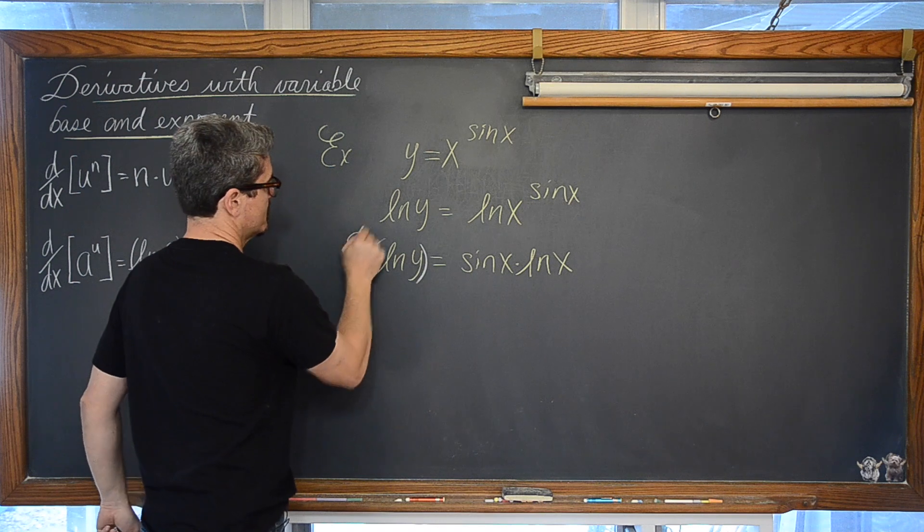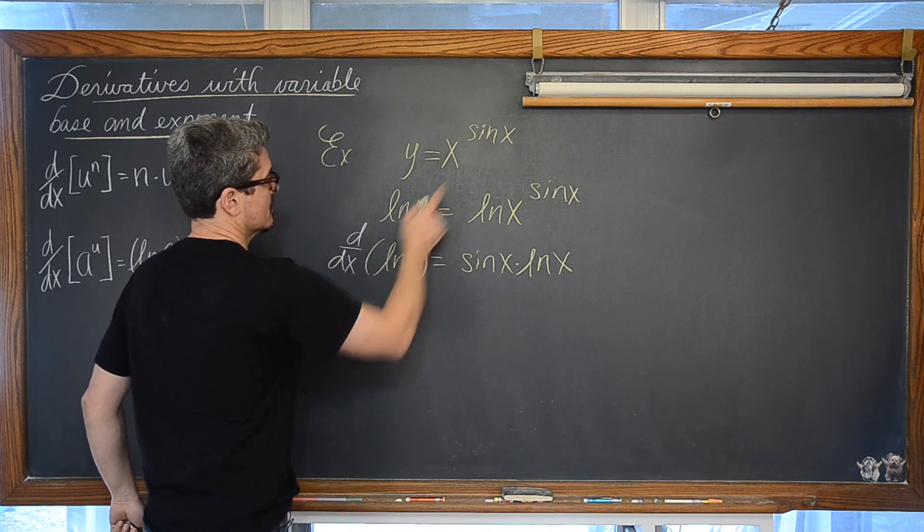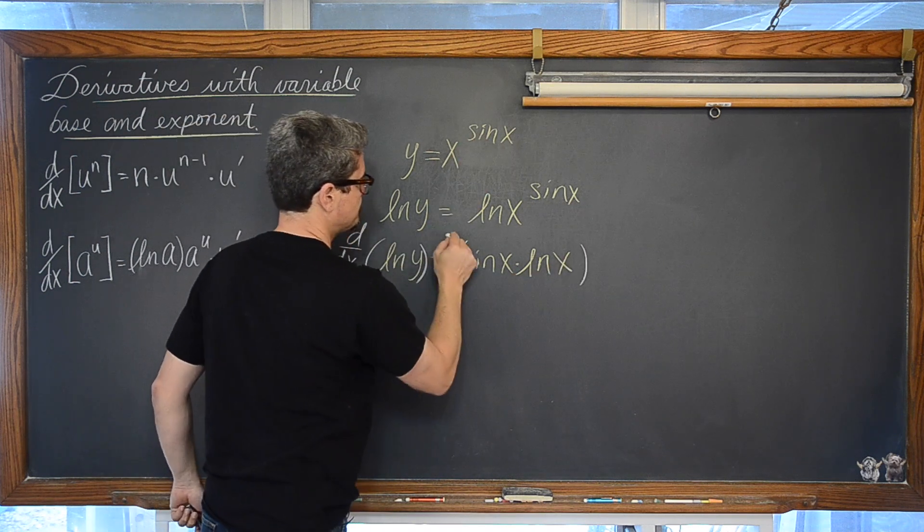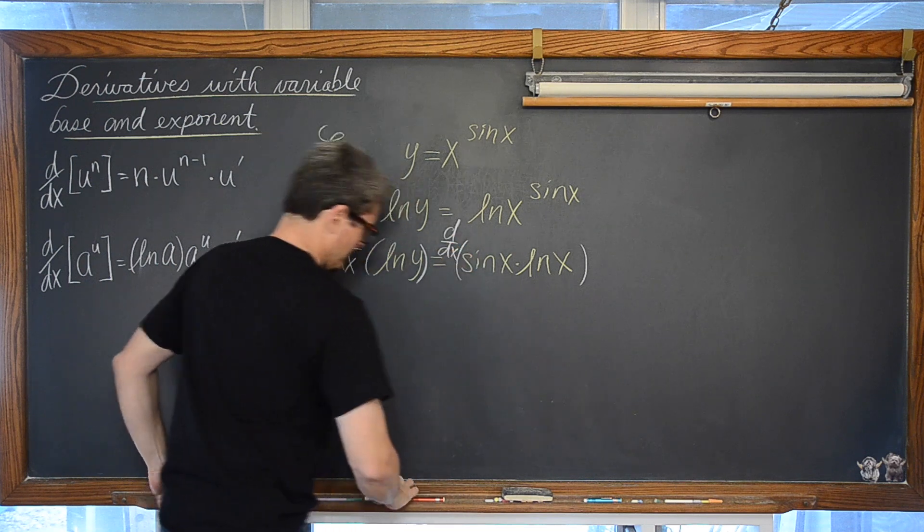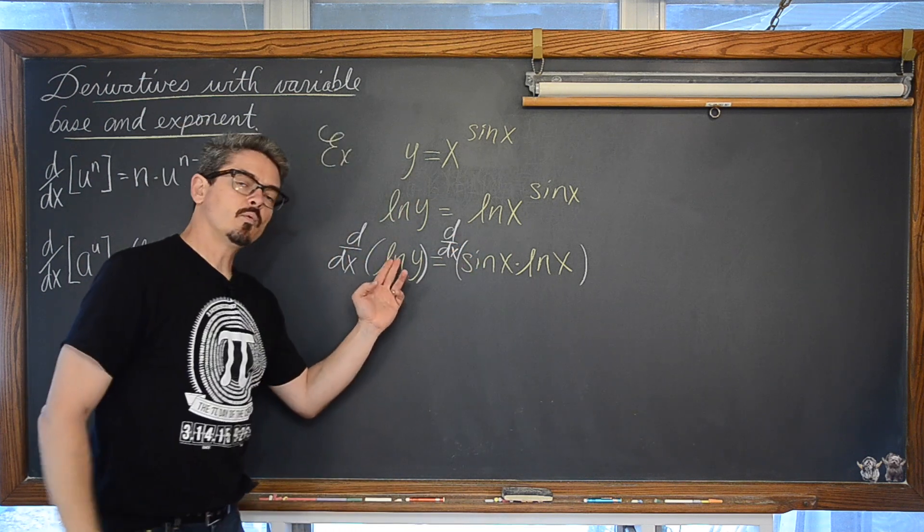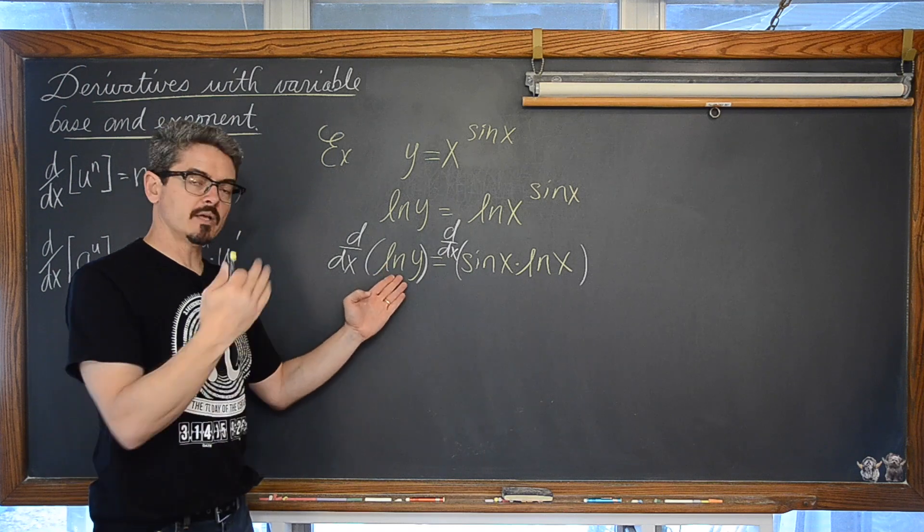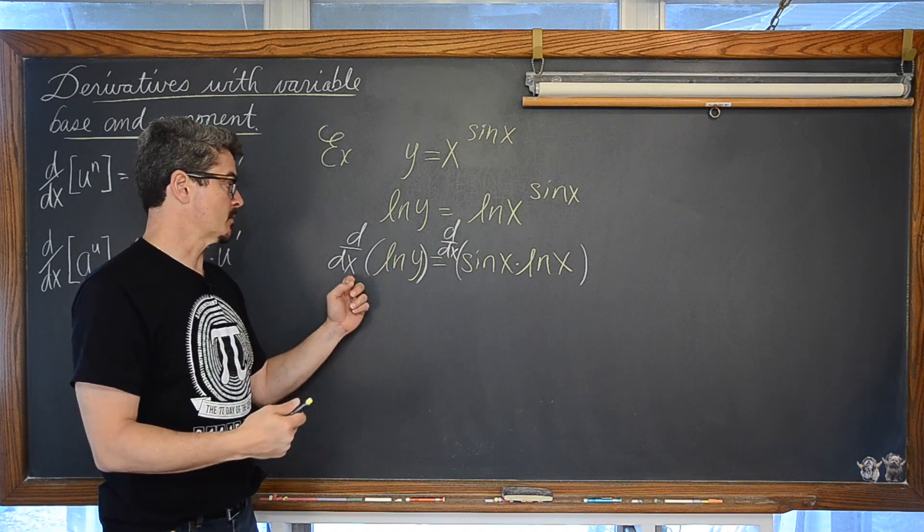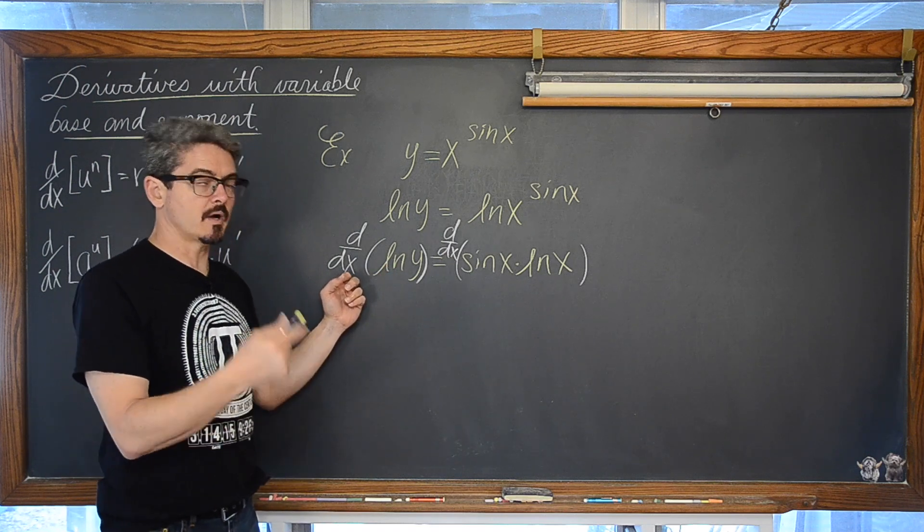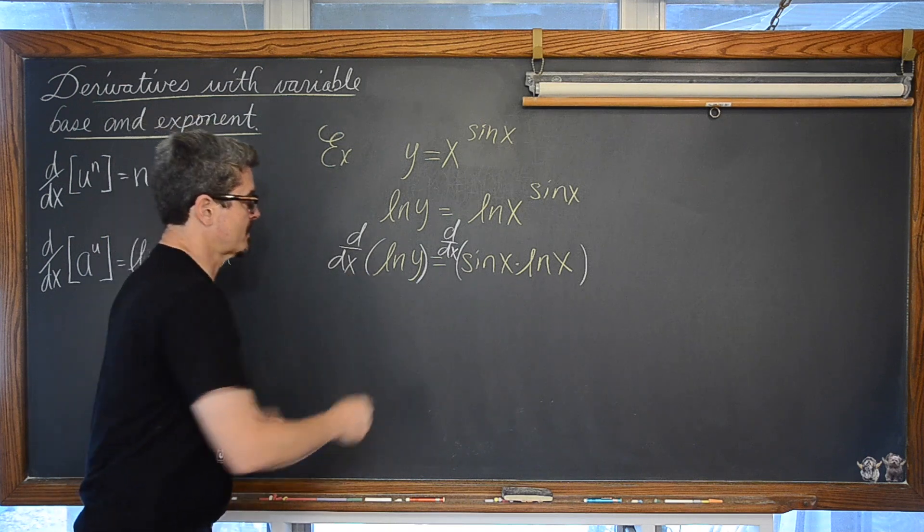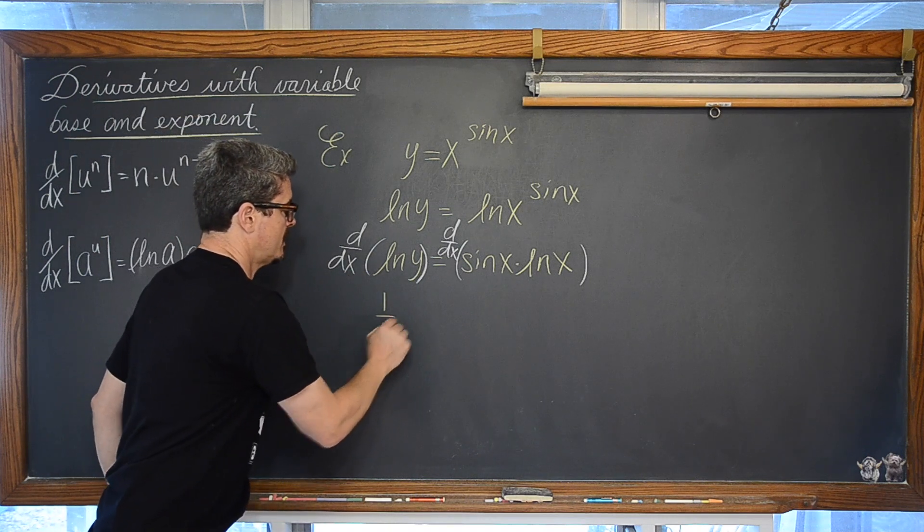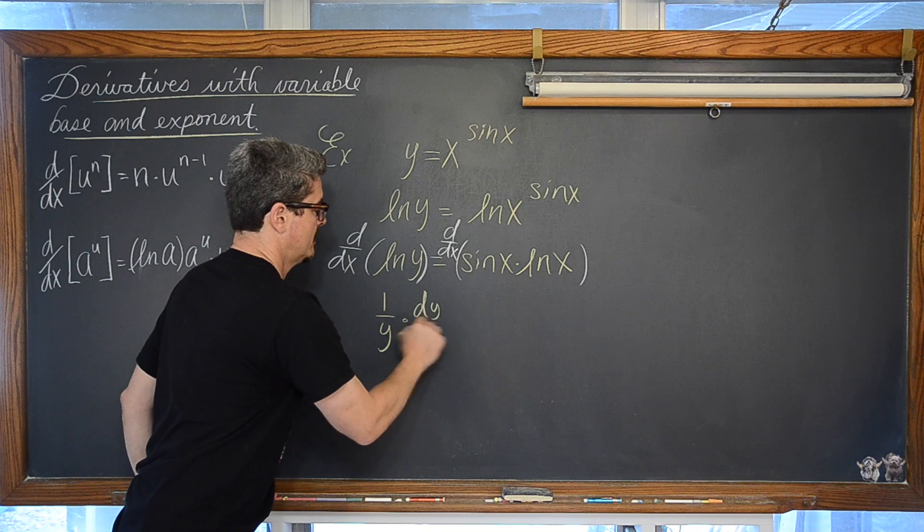We are going to take the derivative with respect to x. That is our original independent variable. And over here with the natural log of y we are not just going to get 1 over y because we are not taking the derivative with respect to y. It is with respect to x.